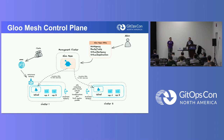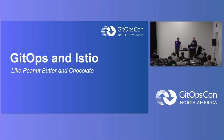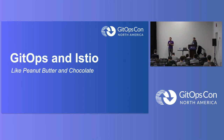Gloo Mesh — both open source and enterprise — allows for abstraction at the multi-cluster layer, making it very easy to consume. Everything is done via declarative configs and CRDs, which makes it perfect for GitOps. Since all the configurations to manage your service mesh are just CRDs and YAML, it's all Kubernetes native.